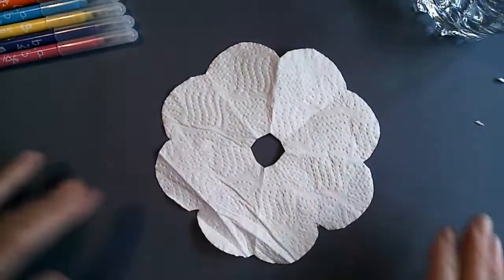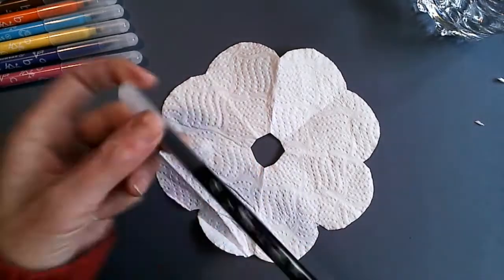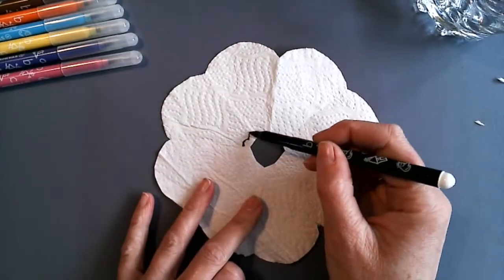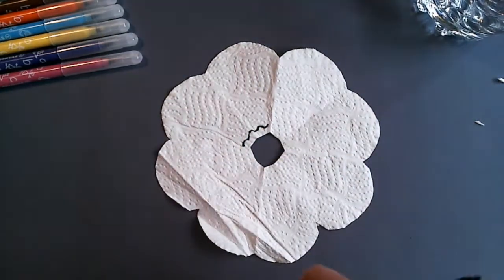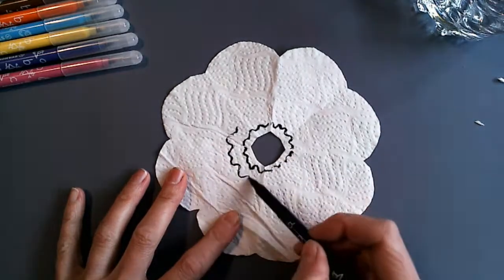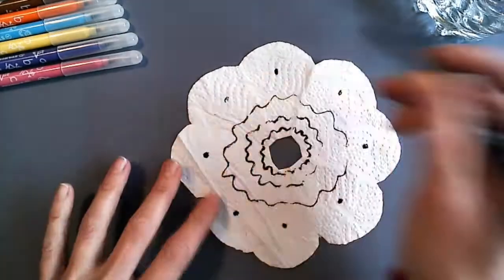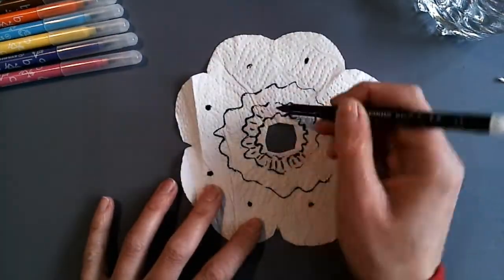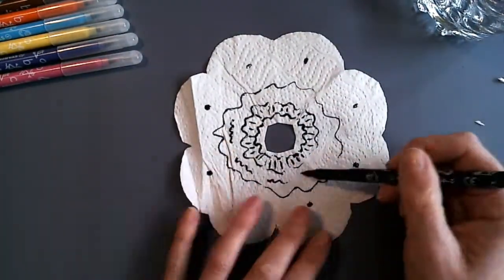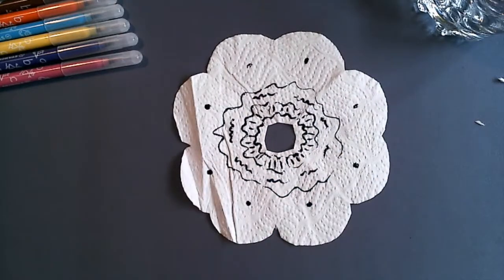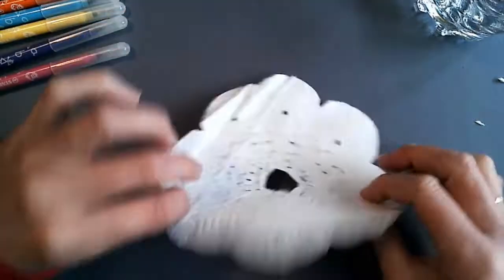Take a black pen and draw any patterns around the central point working outwards. You can try dots, dashes, lines, zigzags. Note that the more you put on, the better your flower will be.